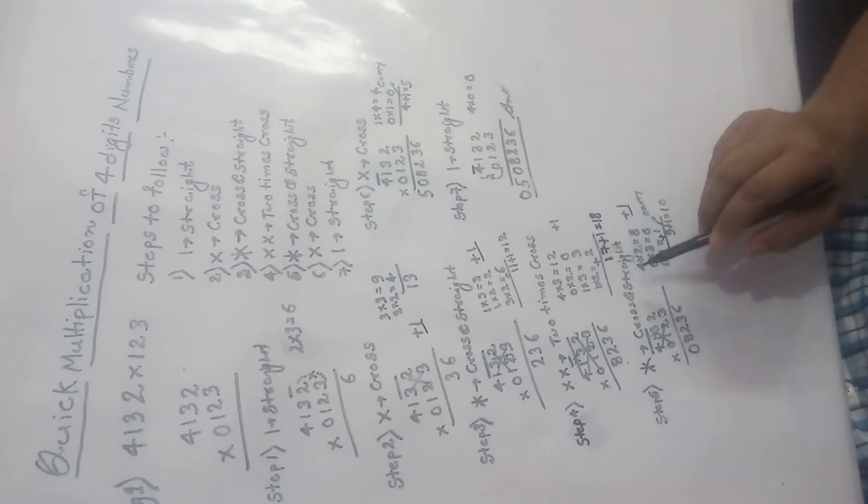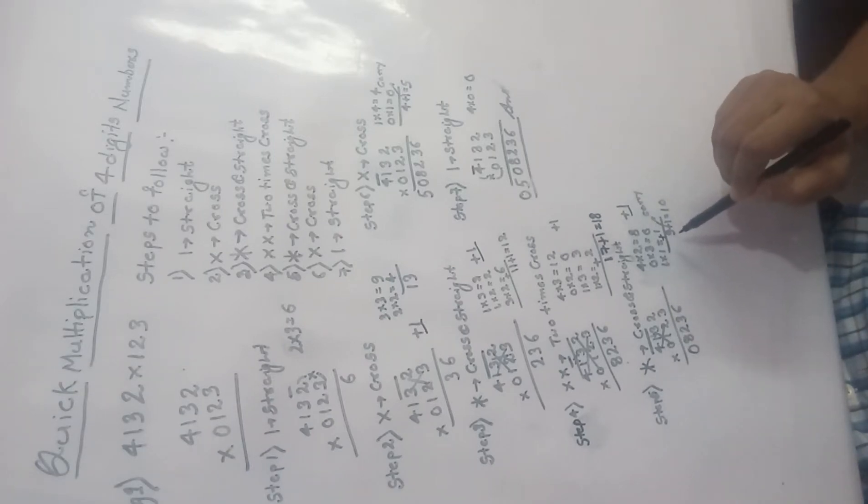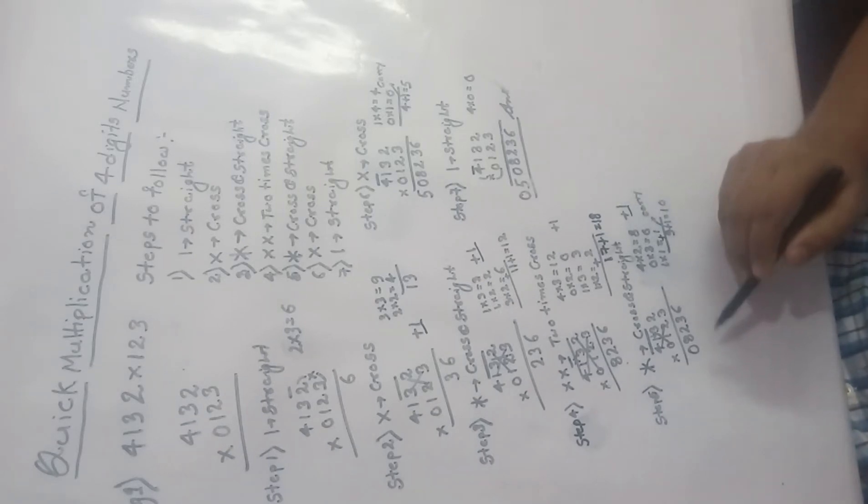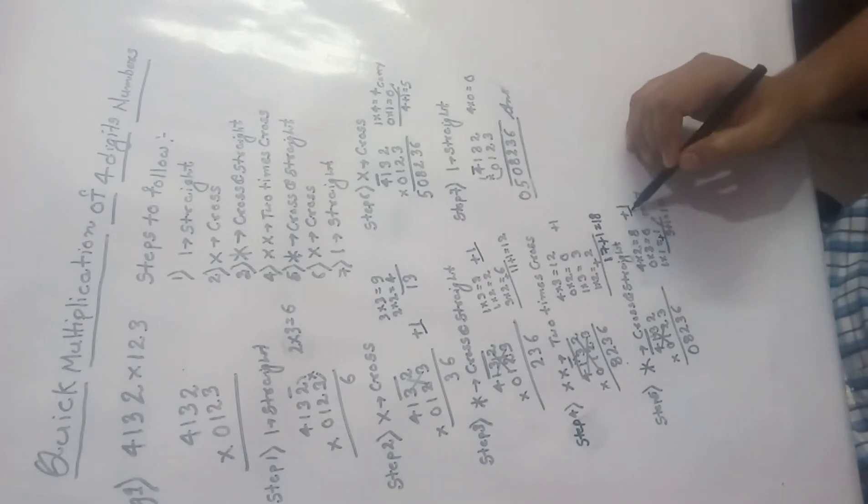Step 6, so 4 into 2 is 8, 0 into 3 is 0, 1 into 1 is 1, so adding all together, 8 plus 1, 9, 9 plus 1, 10. 10 is 0, again carry plus 1.